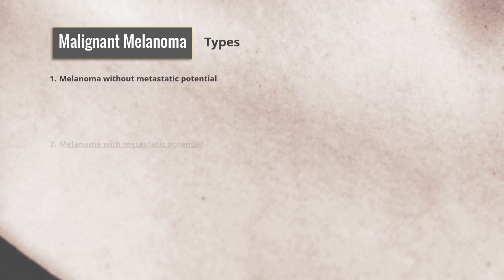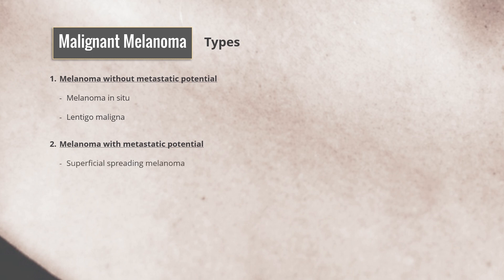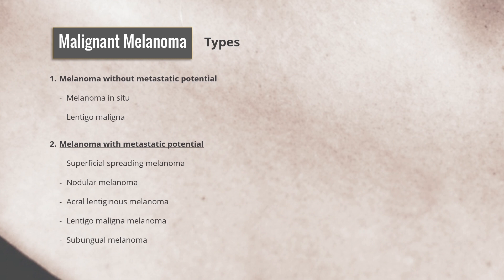Types of melanomas include: melanoma without metastatic potential, and melanoma with metastatic potential. Melanoma without metastatic potential includes melanoma in situ and lentigo maligna. Melanoma with metastatic potential includes superficial spreading melanoma, nodular melanoma, acral lentiginous melanoma, lentigo maligna melanoma, and subungual melanoma.